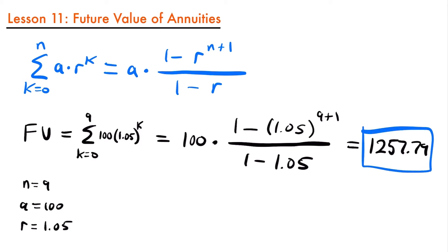This is the value of your annuity after those 10 years, making 10 payments of $100 at the end of each year with an interest rate of 5%. What we did here was shorten the process — instead of calculating 100 times 1.05 to the ninth, then the eighth, all the way down to 1.05 to the zeroth, we used one formula to find this future value. The prior method would give the same result, but it's far less efficient.